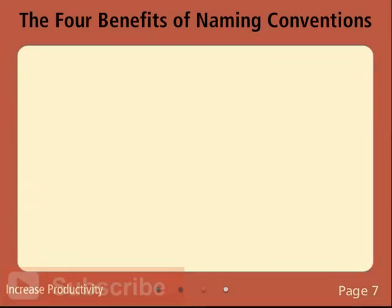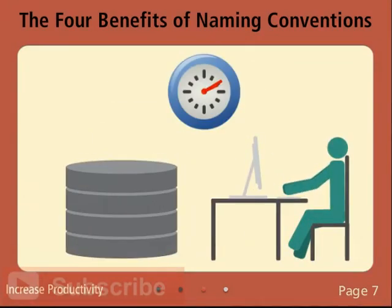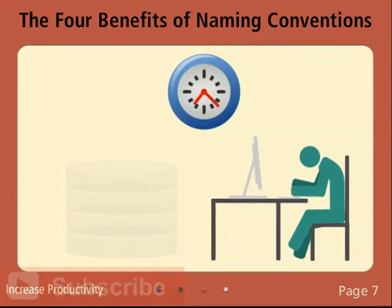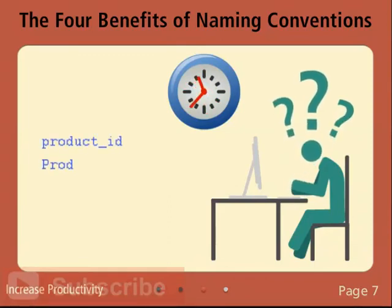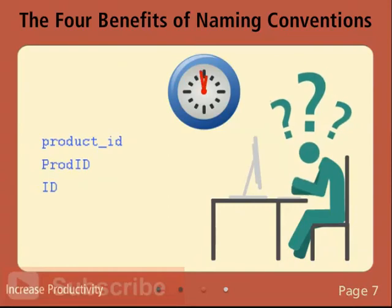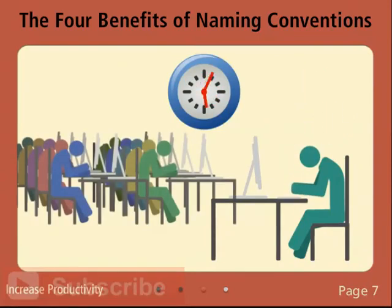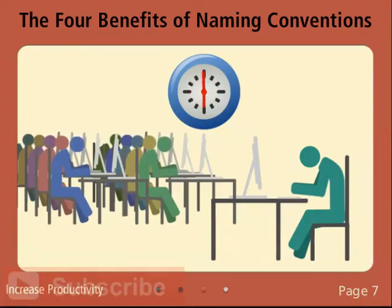Increase Productivity: In a database where inconsistent naming is used, the lack of understanding slows everybody down. When writing SQL statements, the extra time it takes to figure out if the column you want is named 'Product_ID', 'ProdID', or just 'ID' may seem minor. But in a large database with dozens of programmers on a team, those extra seconds add up fast. Spread out over a year, you may be surprised to see how many hours of productivity are lost.